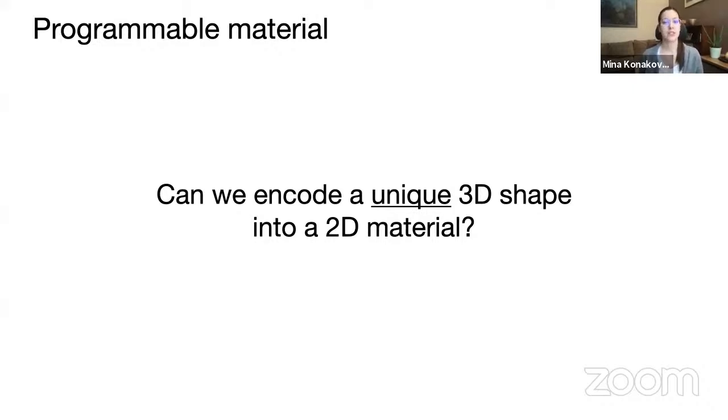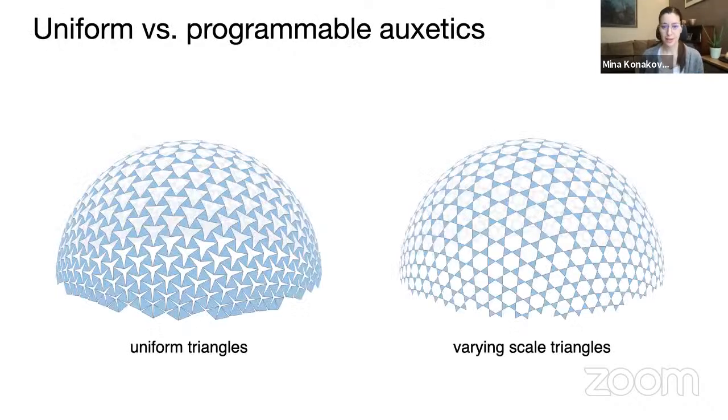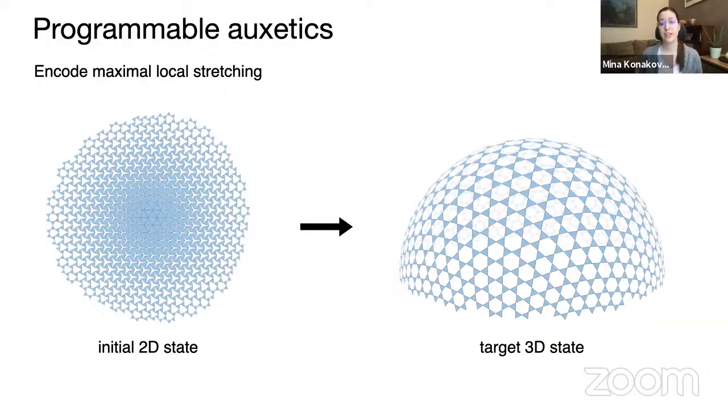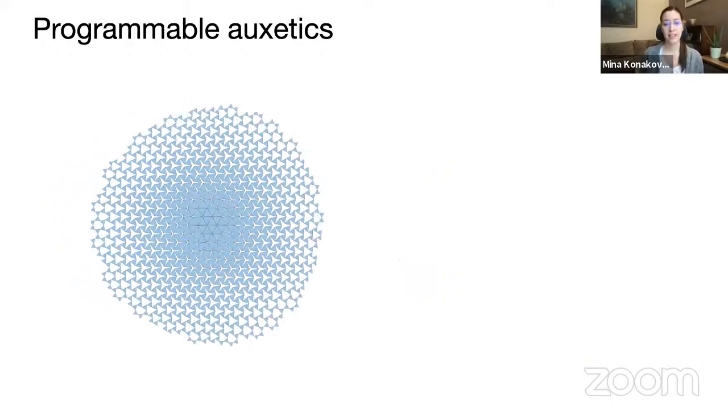This inspired our next research question, actually. So our next research question was, can we program the 2D material to be able to approximate exactly one 3D shape once deployed? And that's exactly what we did. We designed programmable auxetics. In comparison to uniform auxetics that have identical triangles and variable openings in the surface, the programmable auxetics are fully open everywhere, but vary the scales of the triangles. And this way we can simply take the material, stretch it out everywhere to the maximum, and achieve the encoded shape.